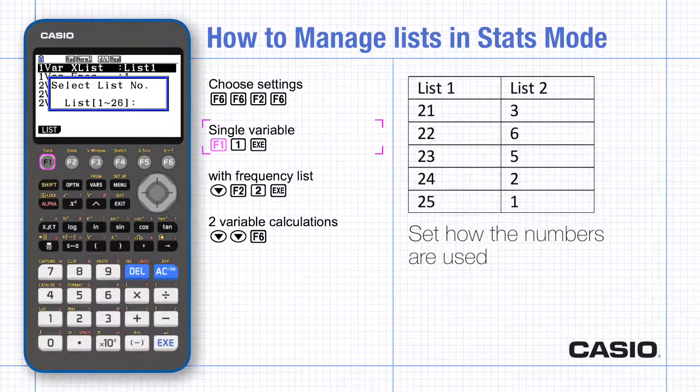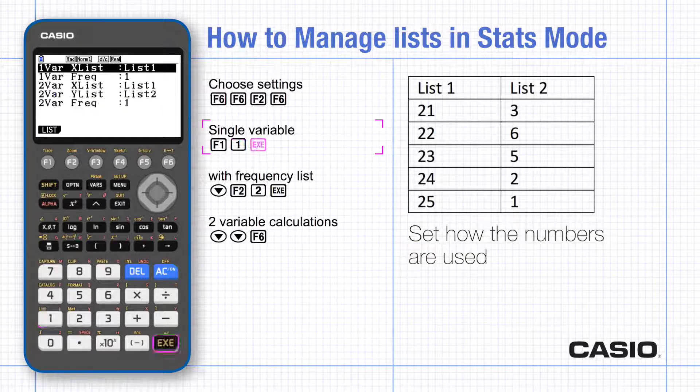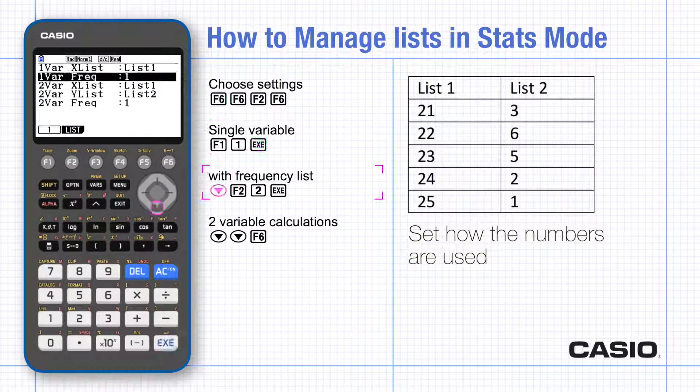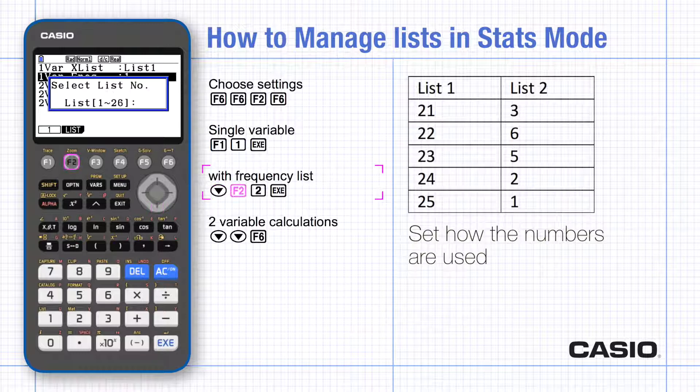Choose which list you want to use for your calculations and scroll to change the frequency from 1 to the numbers in list 2.